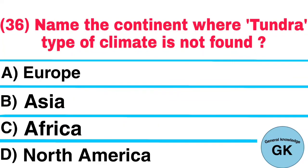Question number 36. Name the continent where Tundra type of climate is not found: A. Europe, B. Asia, C. Africa, D. North America. Answer: Africa.